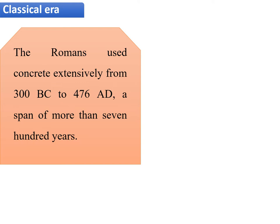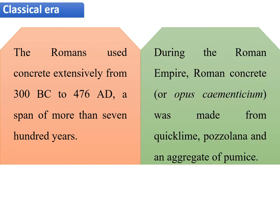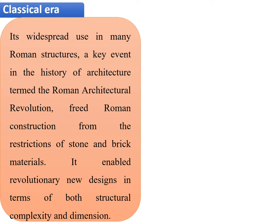The Romans used concrete extensively from 300 BC to 476 AD, a span of more than 700 years. During the Roman Empire, Roman concrete or opus cimentitium was made from quicklime, pozzolana, and an aggregate of pumice — pumice being a byproduct of lava. Its widespread use in Roman structures was a key event in architectural history, termed the Roman architectural revolution, freeing Roman construction from the restrictions of stone and brick and enabling revolutionary new designs in structural complexity and dimensional variation.